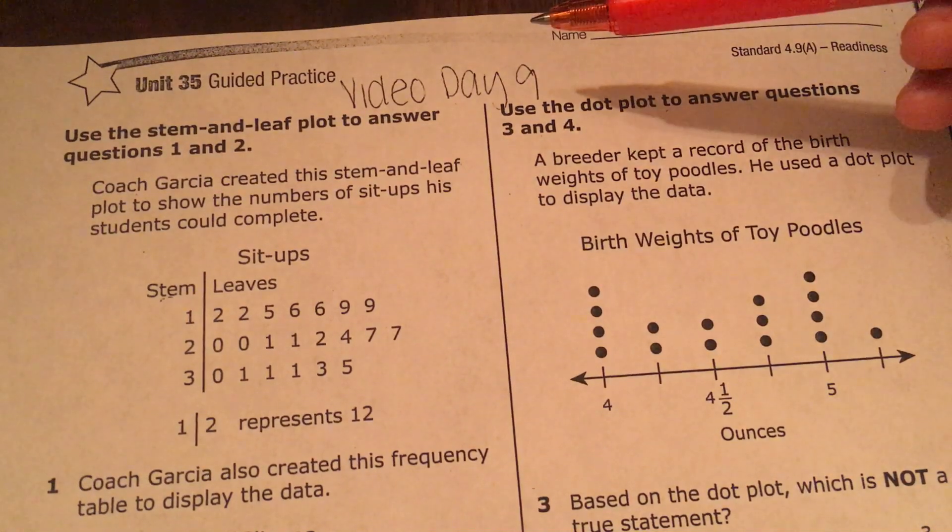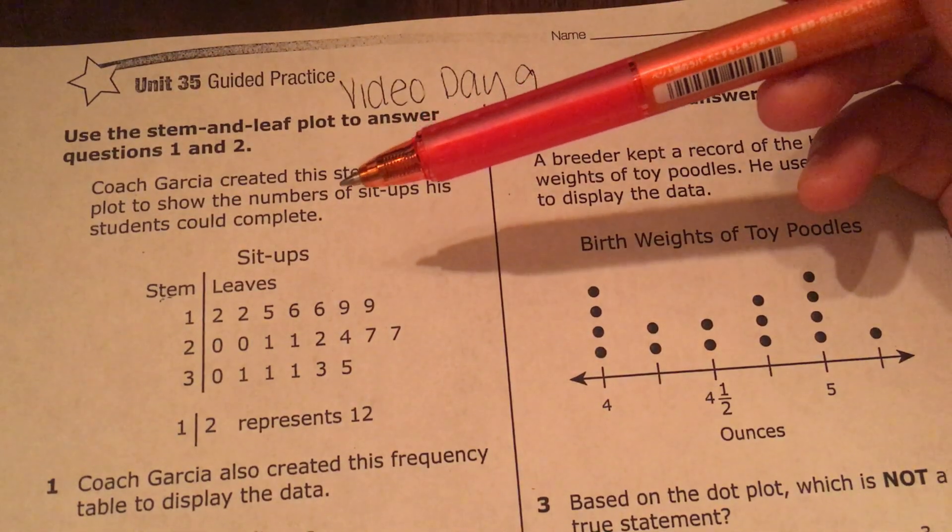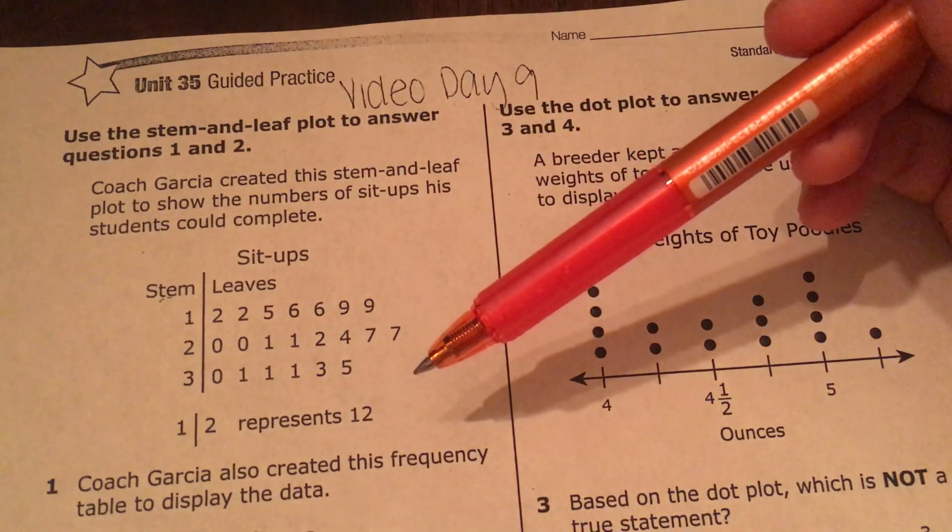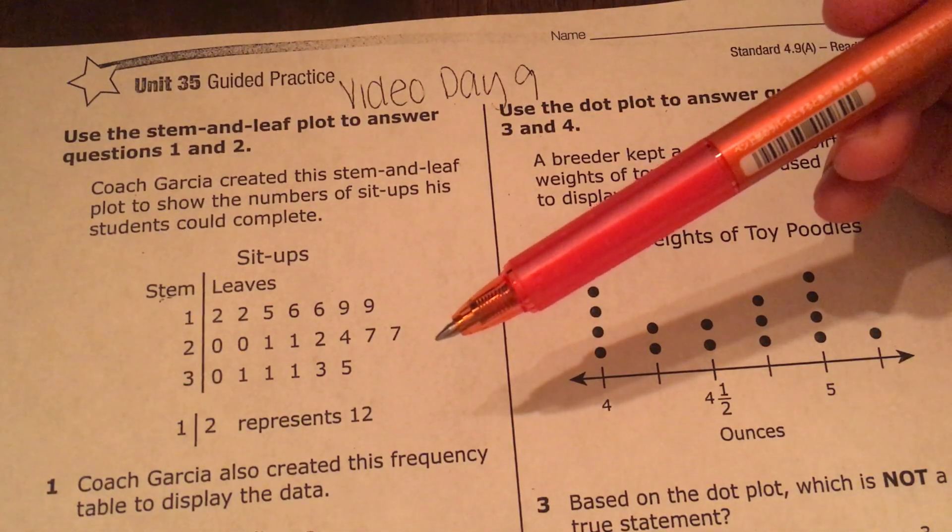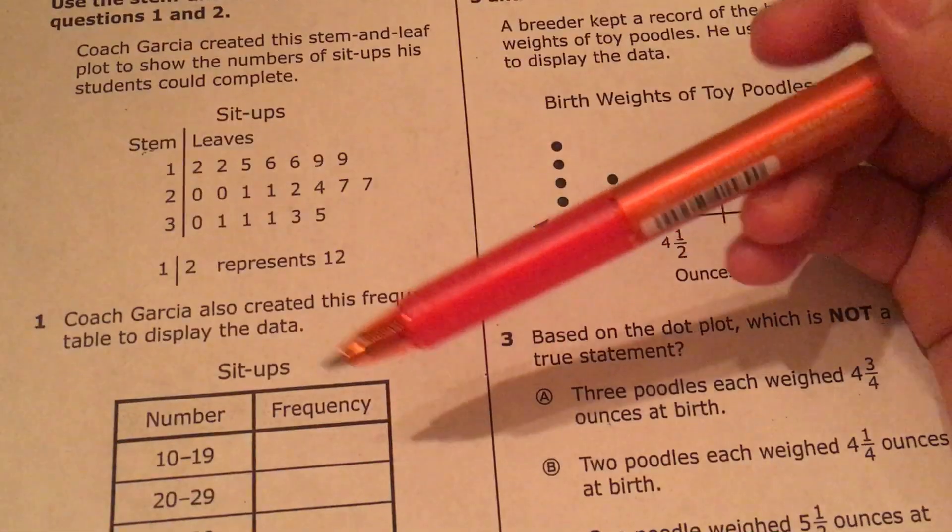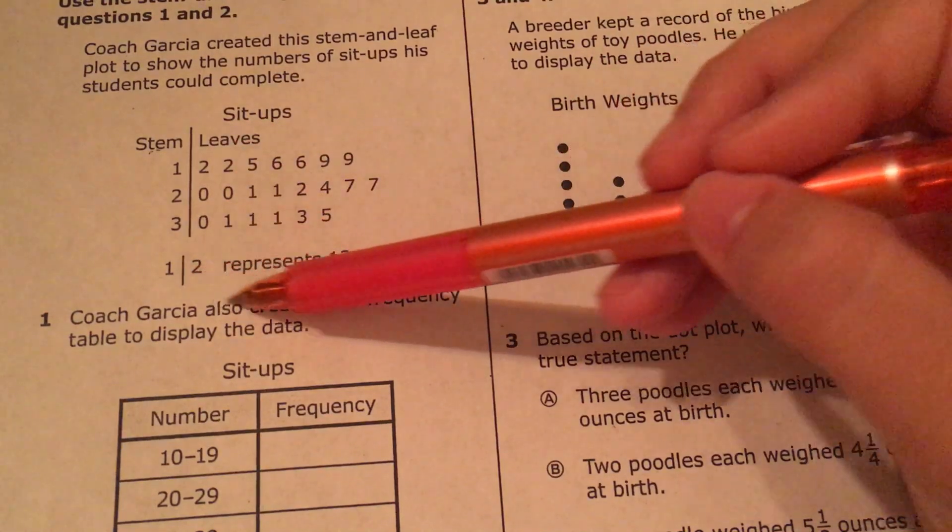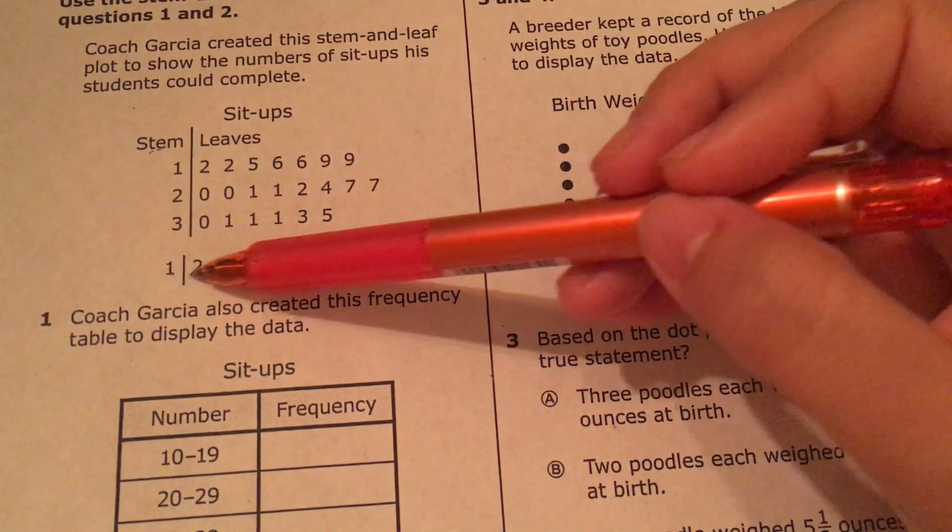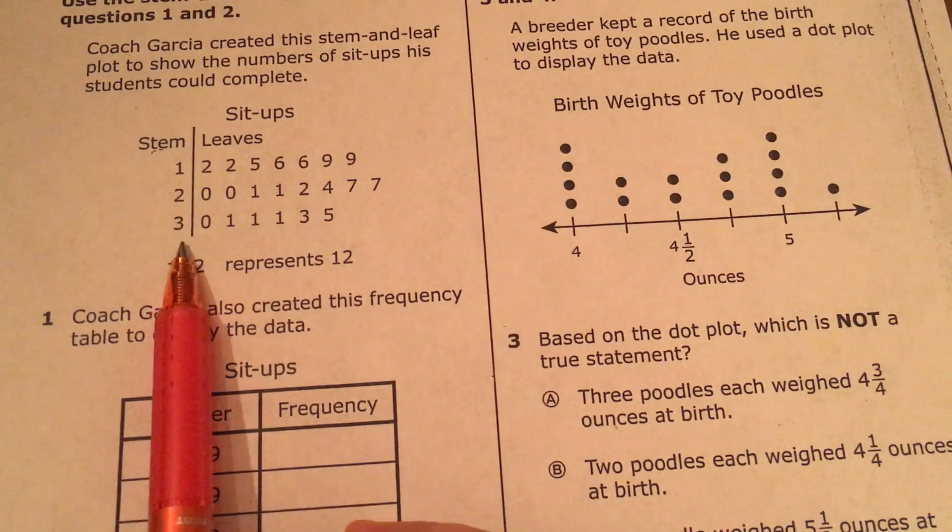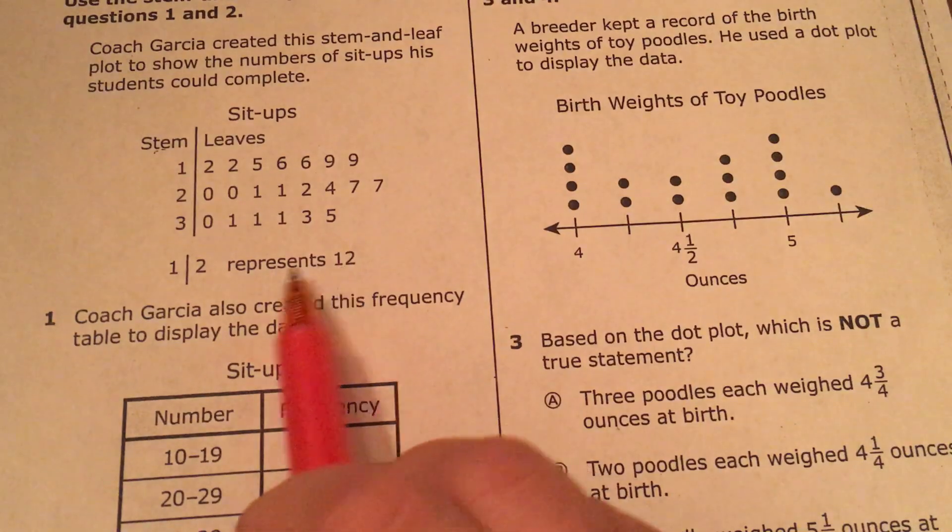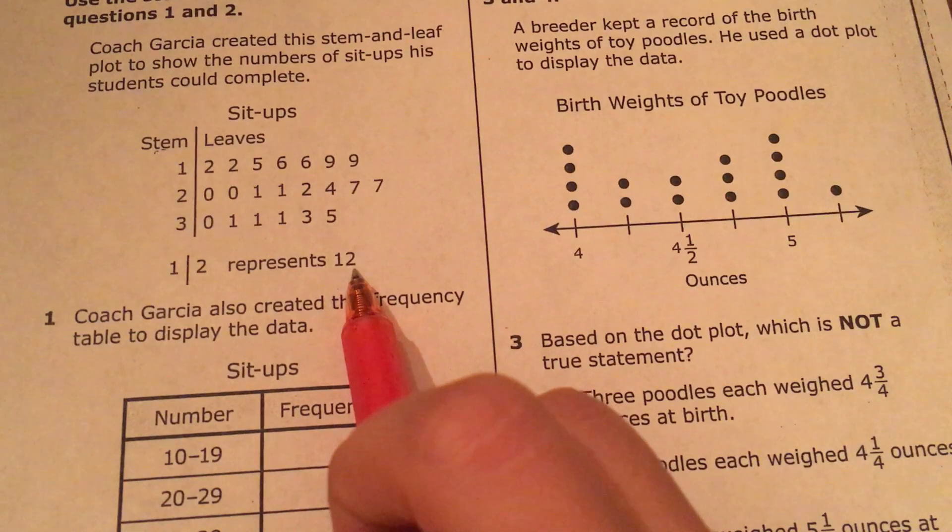Coach Garcia created this stem and leaf plot to show the numbers of sit-ups his students could complete. Coach Garcia also created this frequency table to display the data. Alright, so which frequency are missing from the data? So first I need to look at my stem and leaf plot and always look at the key first. They always have to give you a key. So if you notice the 1 is in the stem, that means it represents the 10's place, and the 2 is in the leaves, and that represents the 1's place.